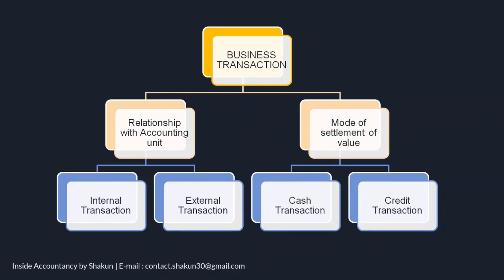Business transactions can be classified on two bases. The first is relationship with the accounting unit. On this basis, transactions are of two types: internal and external. Internal transactions are those which do not involve any second party. For example, depreciation charged on machinery, or the transfer of raw material from the production department to the sales department.